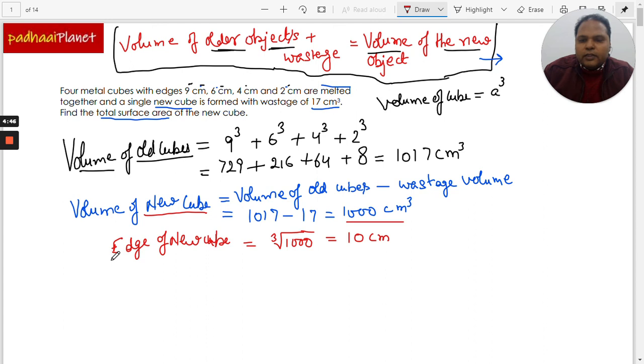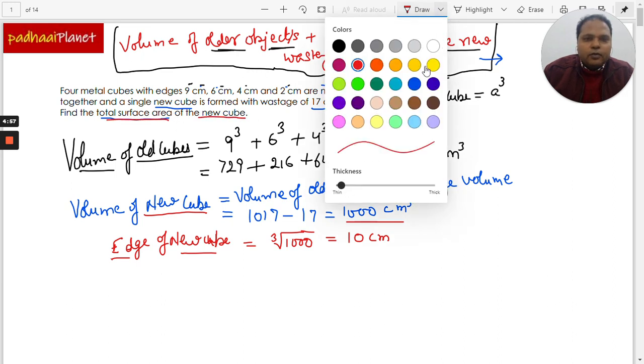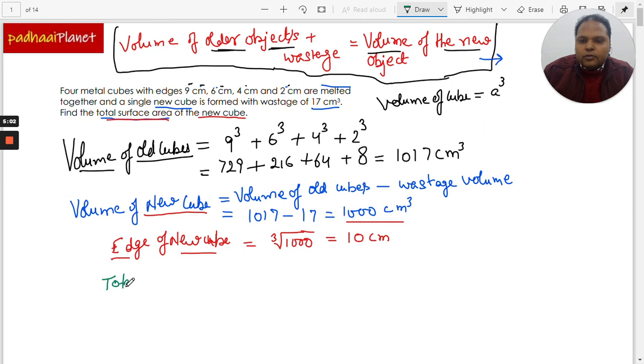So now we have got the edge of the new cube and what we were to find out was the total surface area of the new cube. So now it is very simple. We already know the total surface area of the new cube, of any cube, the total surface area of the cube